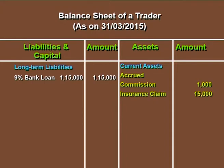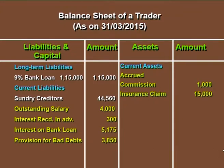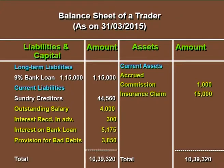Bank loan is shown as Rs 1,15,000 directly in the outer column, as interest on bank loan has been reported separately as a liability. Once all items are entered, totals are put on both sides of the balance sheet. Since the trial balance was tallied, the balance sheet must tally as well. The total of all items on the asset side comes to Rs 10,39,320, which matches the total on the liabilities and capital side — confirming there are no clerical or other errors.